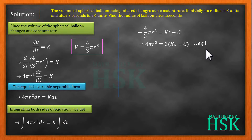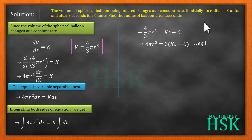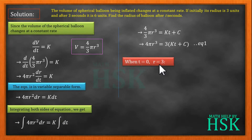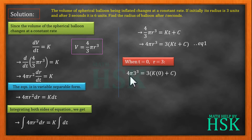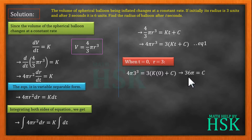To find the radius after t seconds, we need the values of k and c using the given conditions. The first condition: initially the radius was 3, so when t = 0, r = 3. Placing r = 3 and t = 0 in equation one: 4π(3³) = 3(k·0 + c), which gives 4π·27 = 3c, so 36π = c, meaning c = 36π.